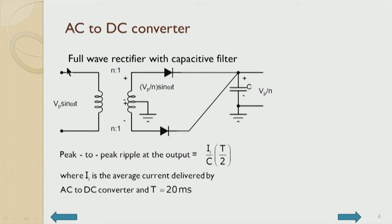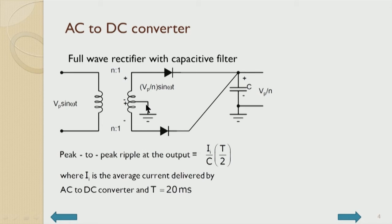The line voltage VP sin(ωt) is applied to a center-tap transformer with turns ratio N:1. We get VP sin(ωt)/N and -VP sin(ωt)/N around the center tap. One diode rectifies the positive half and the other rectifies the negative half, both pumping current into the common capacitor.